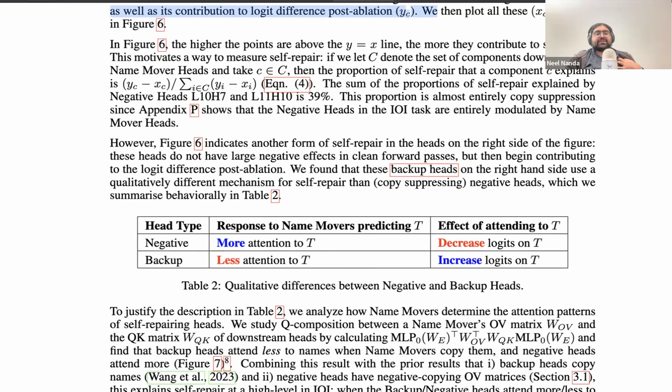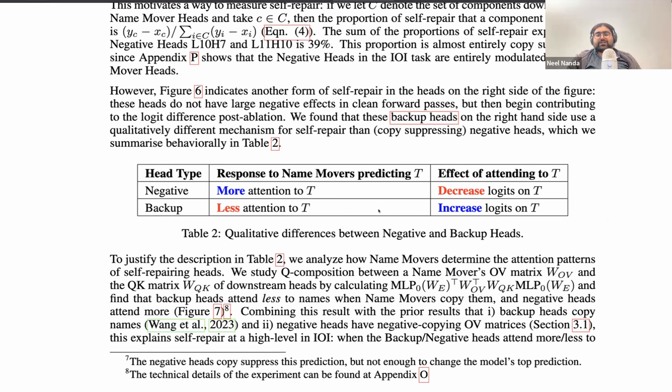Originally, our definition was something like, oh, look at what the logit difference was originally, and then if it's negative, then it's a negative head, and if it was positive originally, then it's a backup head. But we were able to do some actual matrix analyses to have a more concrete definition of what a backup and negative head is, and so this actually ended up classifying L11H2 as a backup head as opposed to a negative head. We'll dive into this more later. I think it's worth highlighting this difference between negative and backup heads as the first real sign that there are multiple mechanisms behind self-repair, that there's not just one answer to why does this happen.